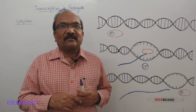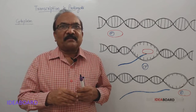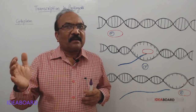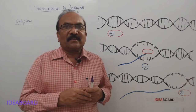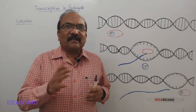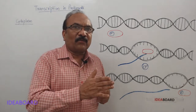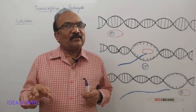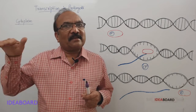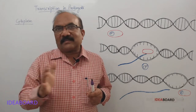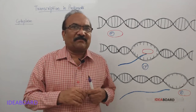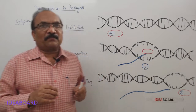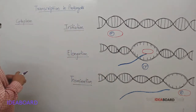But whereas in eukaryotes, after transcription, that mRNA will come out of the nucleus and enters into the cytoplasm and then undergoes the process of translation. So in eukaryotes, transcription occurs in the nucleus, whereas translation occurs in the cytoplasm. But in prokaryotes, both will occur in the cytoplasm. That is one point.